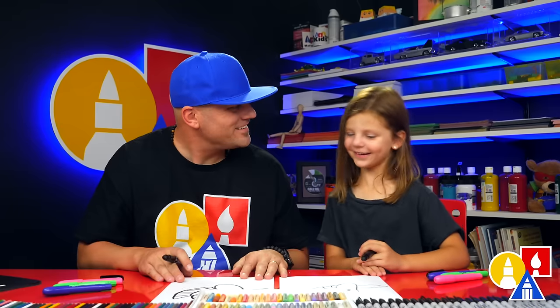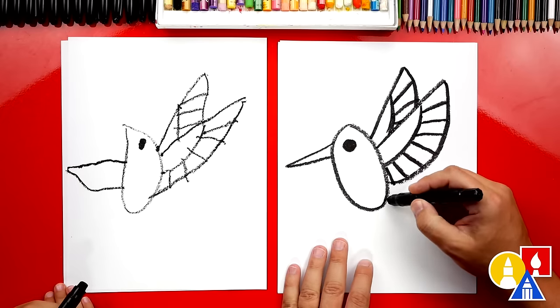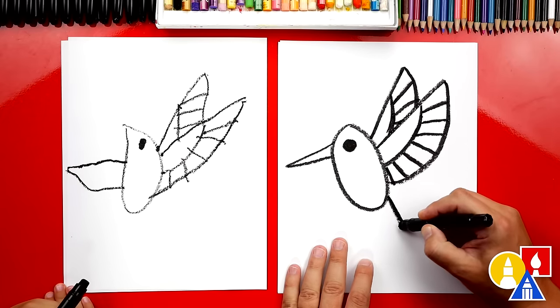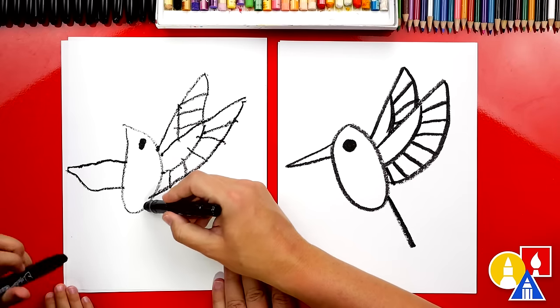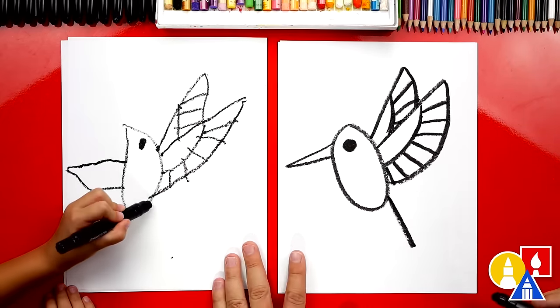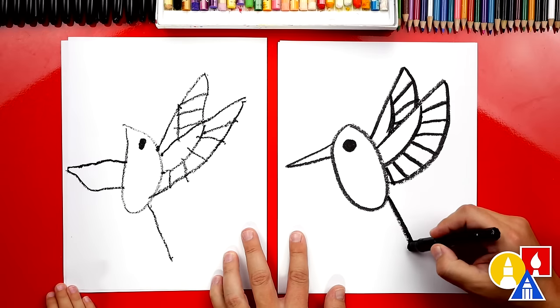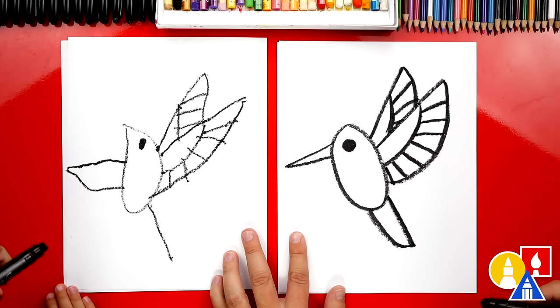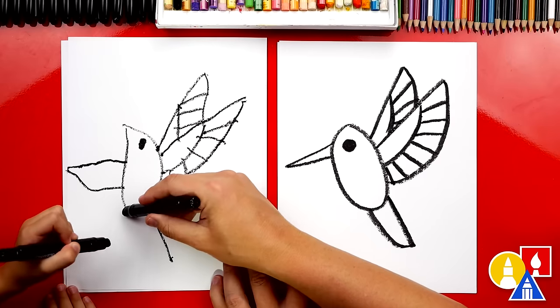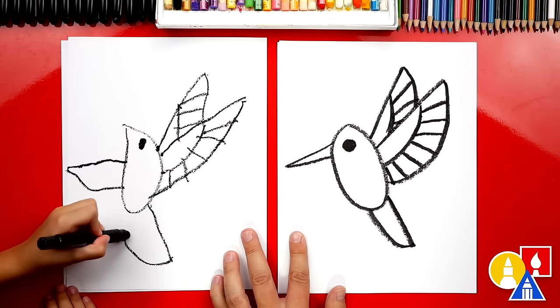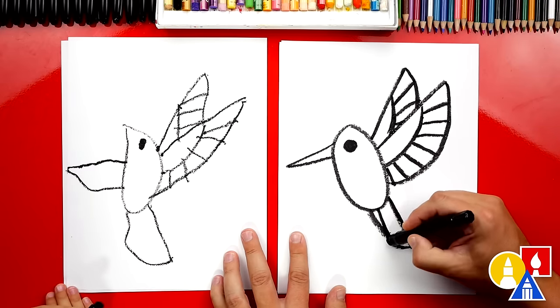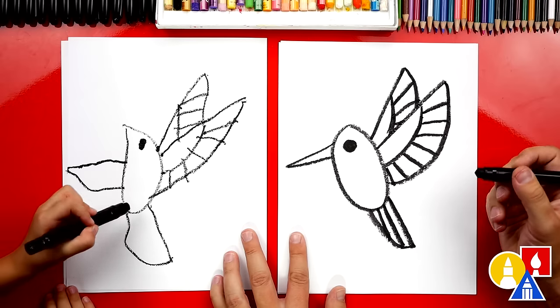Now what's our hummingbird missing? A tail. Yeah, a tail. Let's draw it right here on the back. We're gonna draw the line coming down. So we can start right here and come down. And then let's draw a curve coming back up. Let's start here and come back up. Yes, and we could add two feathers inside.